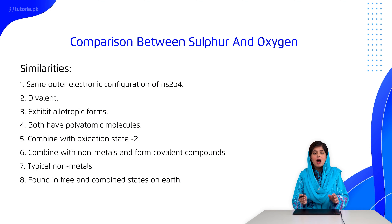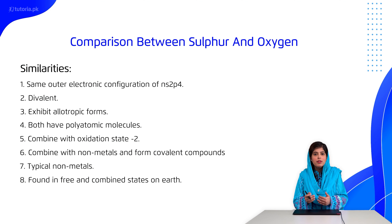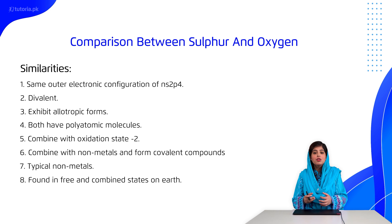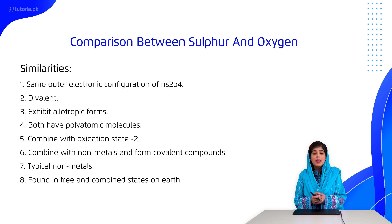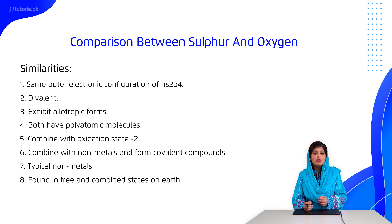Similarities between sulfur and oxygen: both are typical non-metals that combine with metals and non-metals to form covalent compounds. Both exhibit minus two oxidation state, form polyatomic molecules, exhibit two allotropic forms, form divalent ions, and have the same electronic configuration in their valence shell.